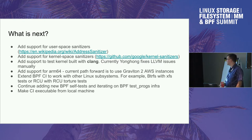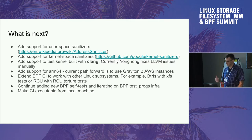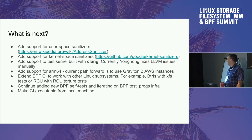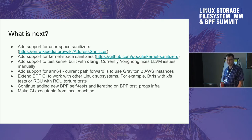We also want to extend BPF CI support for other Linux subsystems. Some obvious candidates are BtrFS with XFS tests or RCU with RCU torture tests — adding more weight to what was mentioned during the lightning talks that all maintainers will benefit. We should continue adding new BPF self-tests and iterate on BPF test_progs infrastructure to make it more usable and convenient.